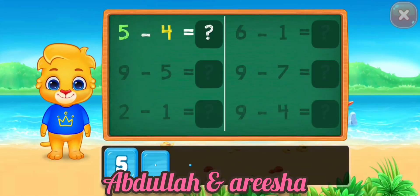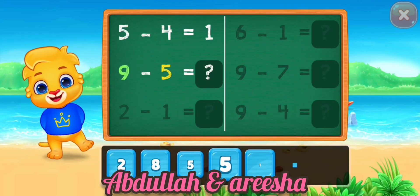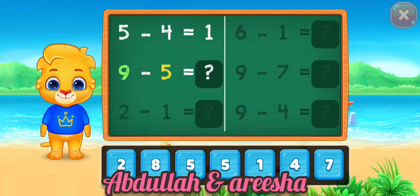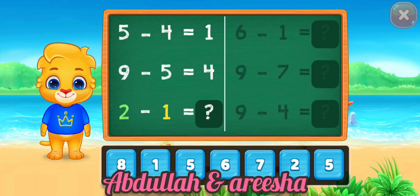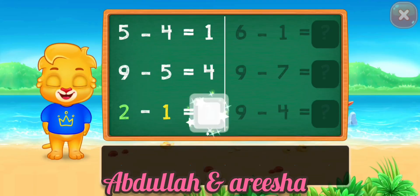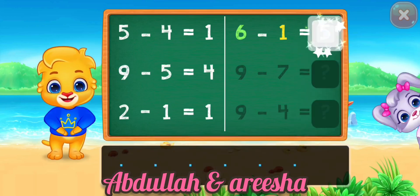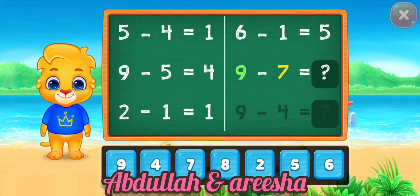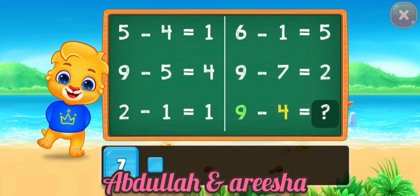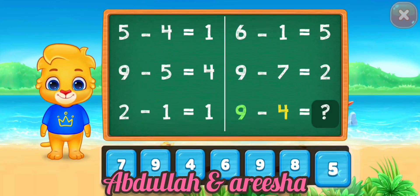5 minus 4 is equal 1. 9 minus 5 is equal 4. 2 minus 1 is equal 1. 6 minus 1 is equal 5. 5. 9 minus 7 is equal 2. 2. 9 minus 4 is equal 5. 5.